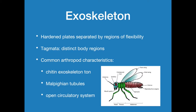Insects do not have an internal skeleton — they have an exoskeleton. The exoskeleton is formed primarily of a protein called chitin. Chitin is believed to be one of the most common proteins found on the planet because it composes the exoskeleton of insects. They also have Malpighian tubules and an open circulatory system. They do not breathe through their head. They breathe through small openings along their abdomen and thorax known as spiracles.